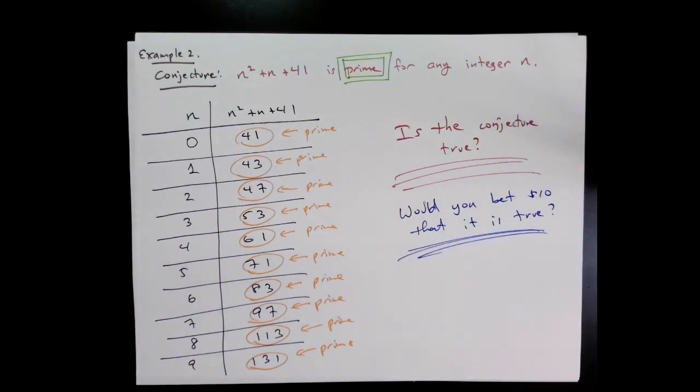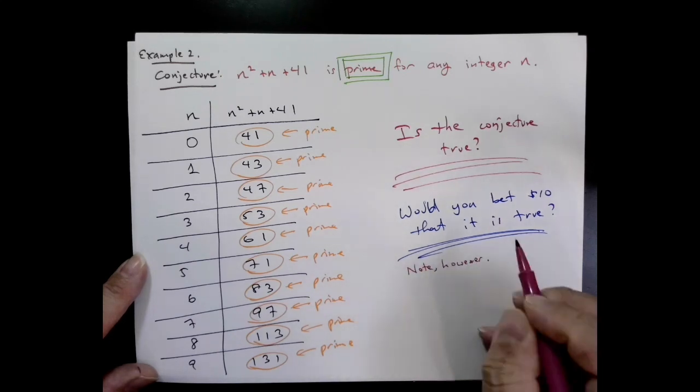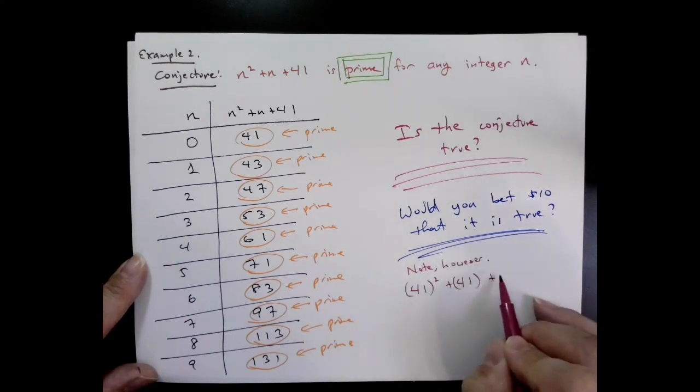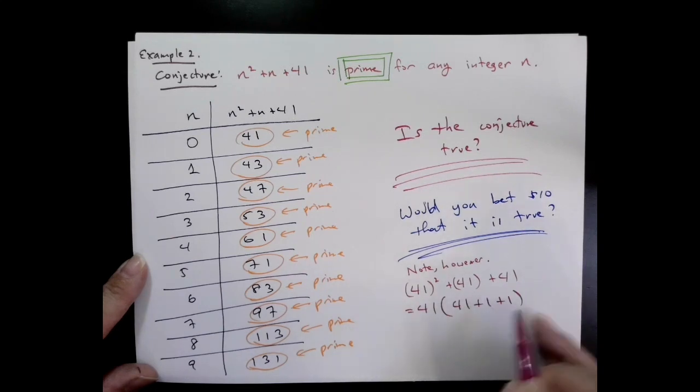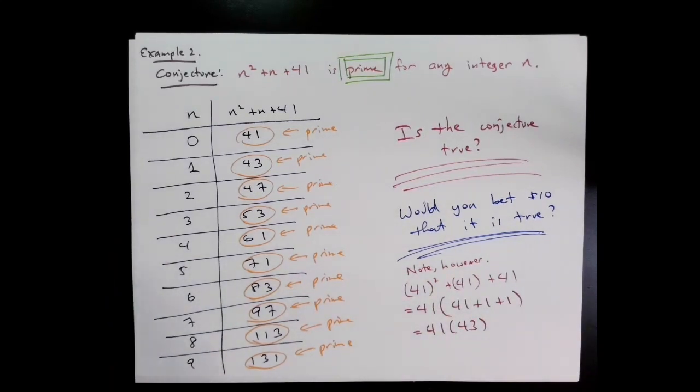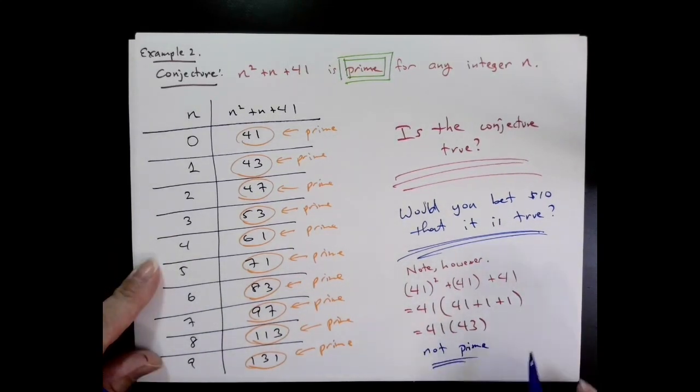It turns out it's not true. One way you can see this very easily is that if you take this function and plug in 41 for n, then you get 41² + 41 + 41. I can pull out a factor of 41 out of there using the distributive law, and that's 41 × 43—that's certainly not prime. So do not take that bet.